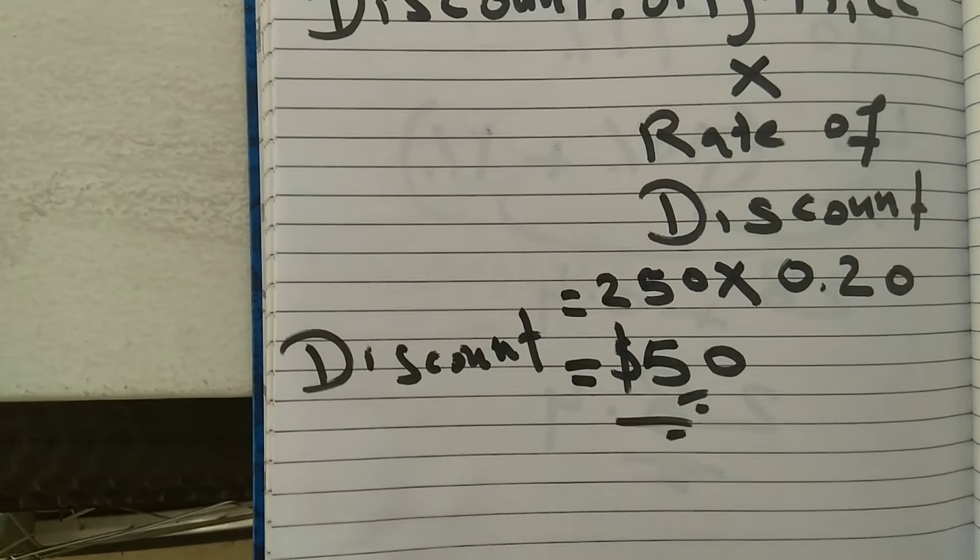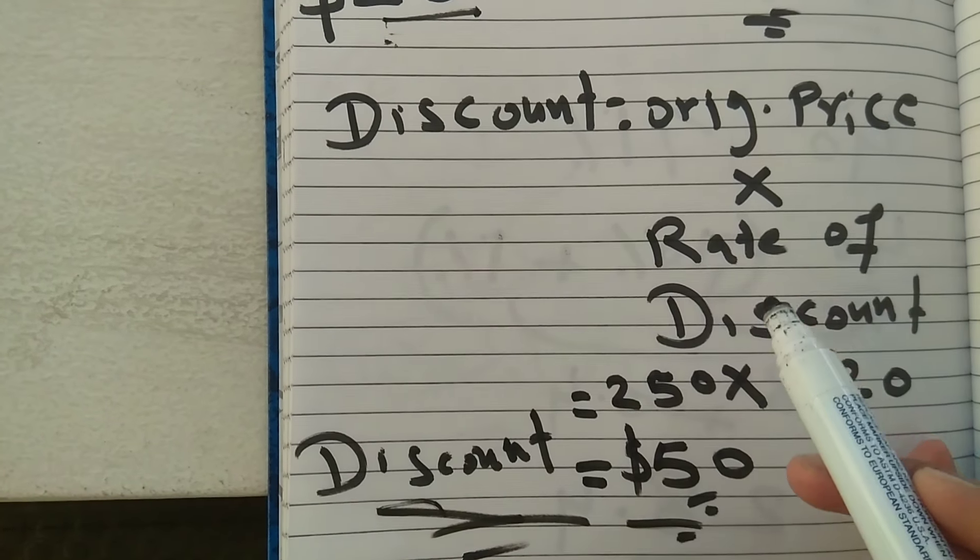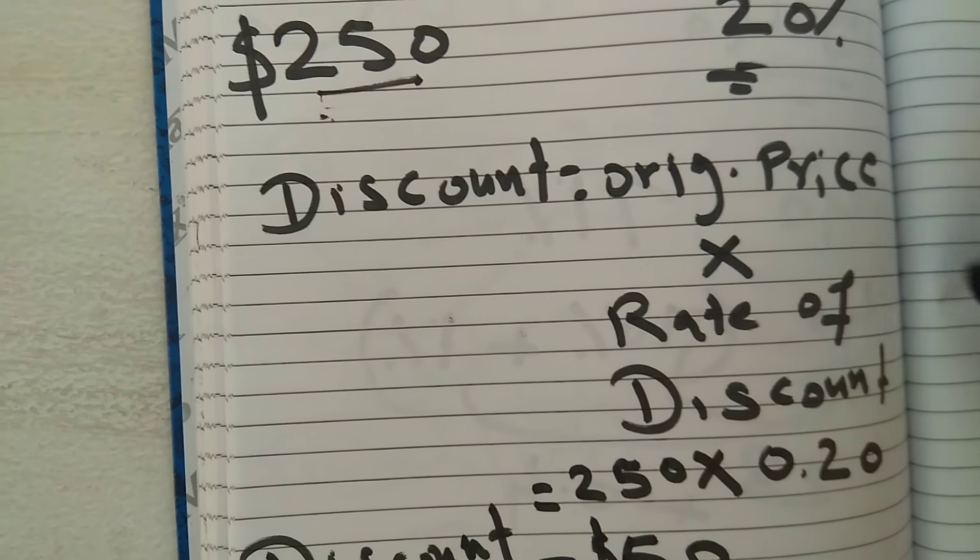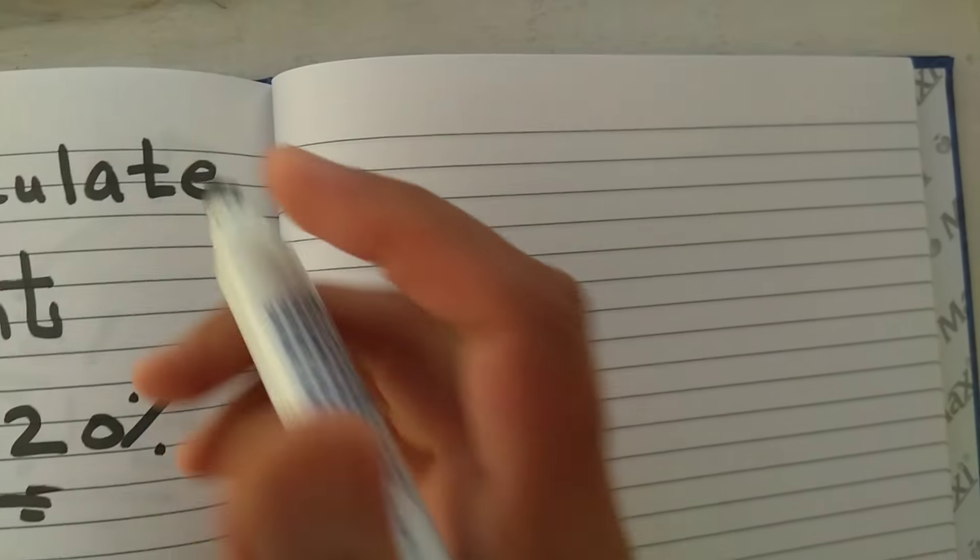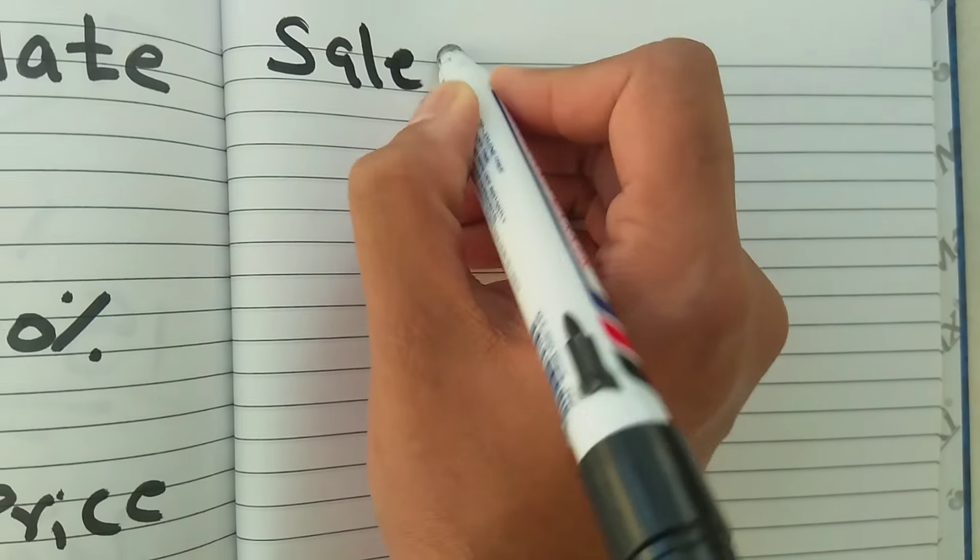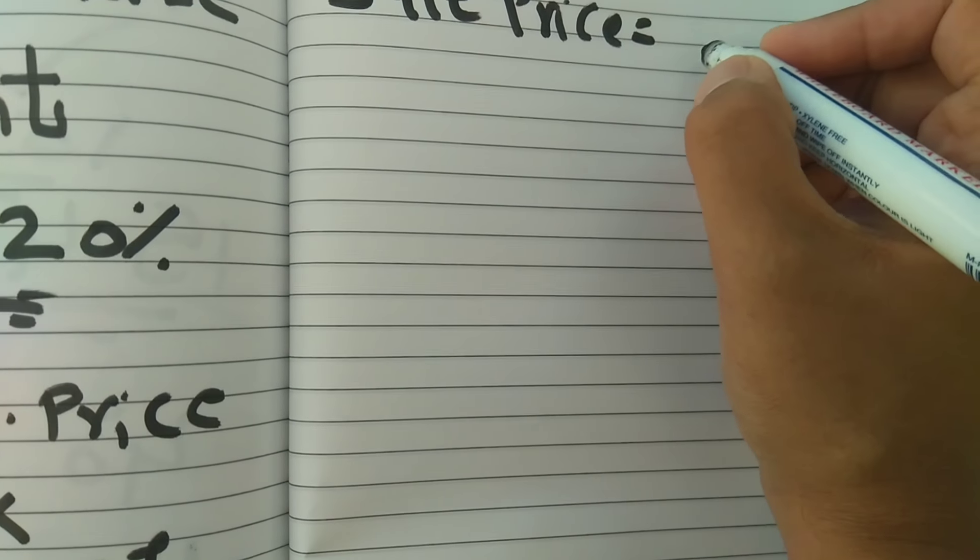That's the formula for discount: original price multiplied by rate of discount. Now let's find out how to calculate the sale price. The formula for sale price is original price minus discount price. The original price is $250, and the discount price we calculated is